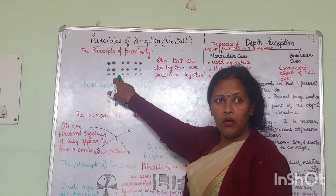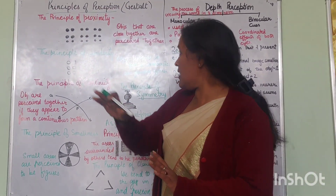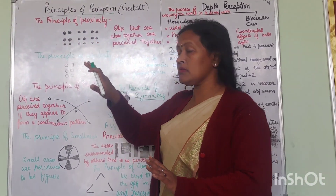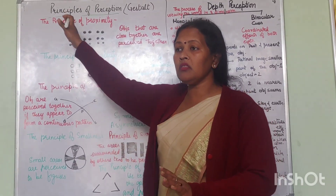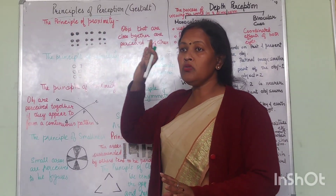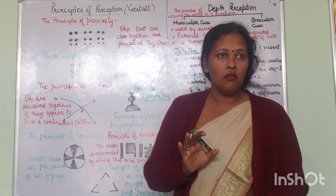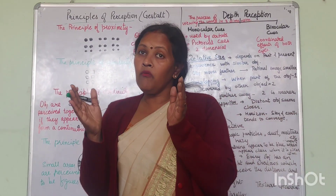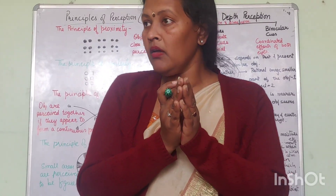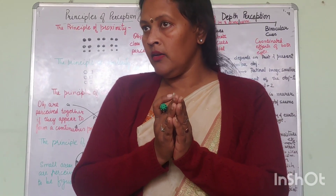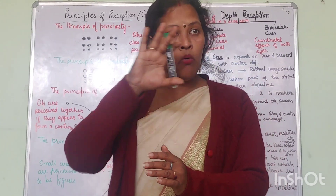I have placed these circles together. You will not say this is a box of six by six — no, you say three rows. Two-two circles each, three rows or three columns. This is a whole picture because of proximity.